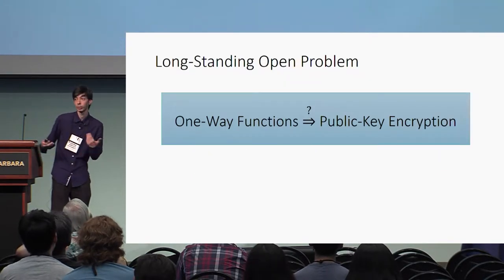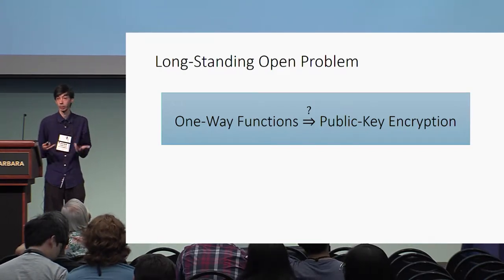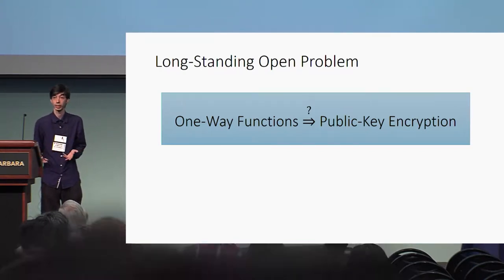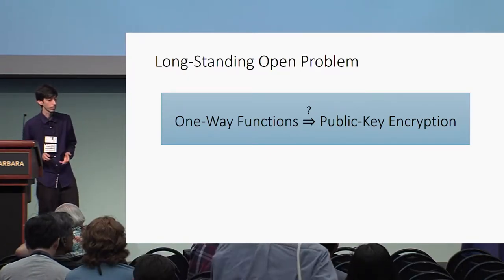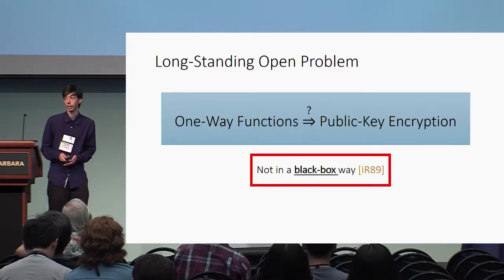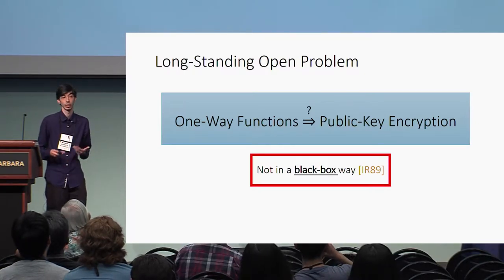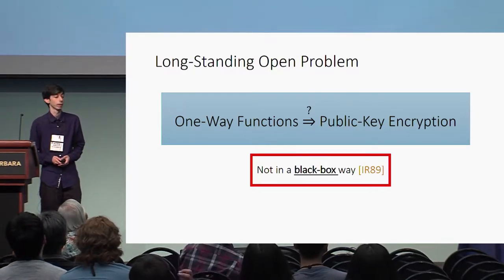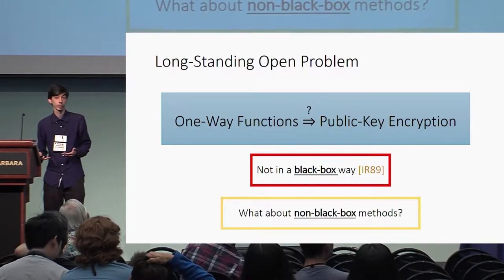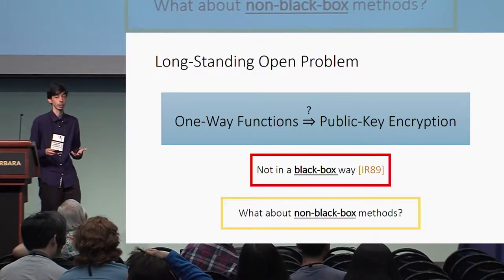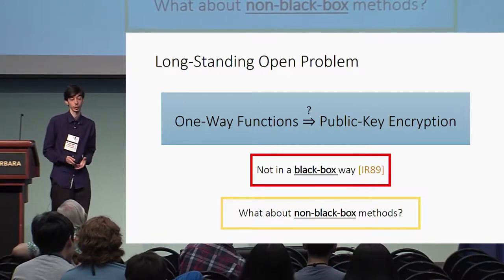In this talk we will revisit the long-standing open problem of whether we could base public key encryption on one-way functions. The seminal result of Impagliazzo and Rudich in 1989 showed that this is not possible in a black box way. This still leaves open the possibility that there are non-black box methods we might use to build public key encryption from one-way functions.